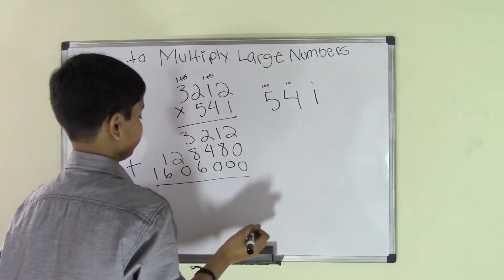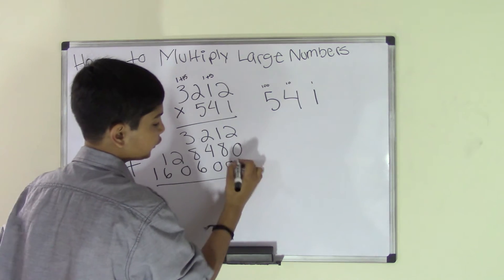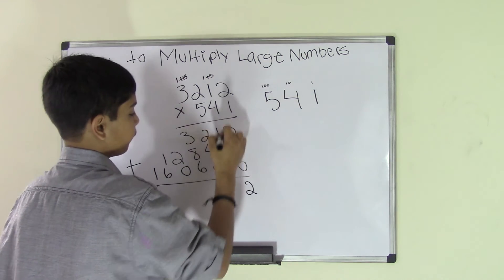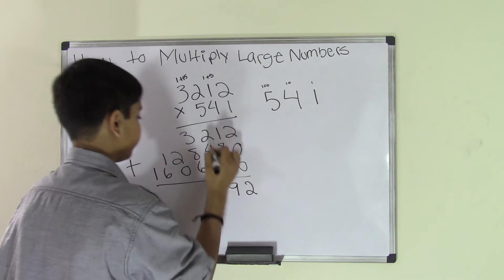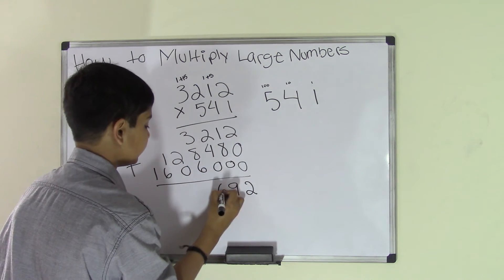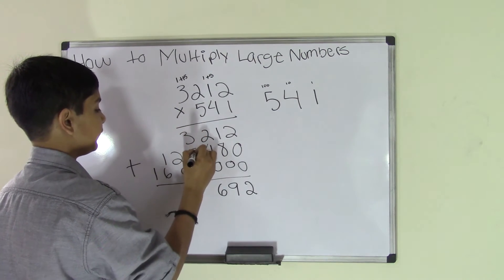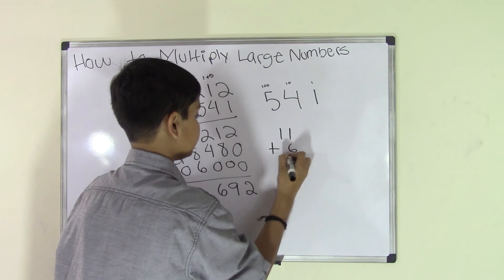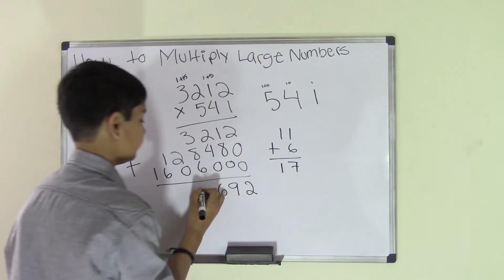2 plus 0 plus 0 is 2. 1 plus 8 is 9. 2 plus 4 is 6. 3 plus 8 is 11, plus 6 is 17, so we bring that 1 over. And 2 plus 1 is 3, and 6 plus 1 is 7.